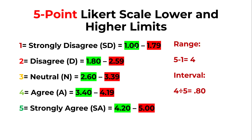So the first range is from 1.00 to 1.79, then 1.80 to 2.59, then 2.60 to 3.39 — this is for neutral — and 3.40 to 4.19 — this is for agree — and 4.20 to 5.00 — this is for strongly agree. This is the interval at which we interpret the mean of Likert scales, with lower and upper limits.